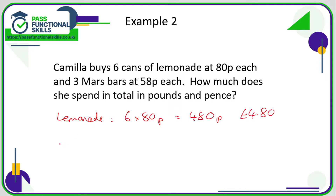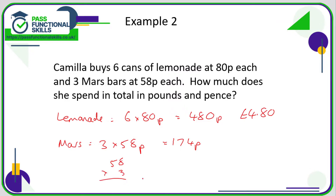Three Mars bars at 58p each — three times 58. That's acceptable to do on a calculator; that gives 174 pence. If you didn't have access to a calculator, you'd just use long multiplication. That is therefore £1.74.